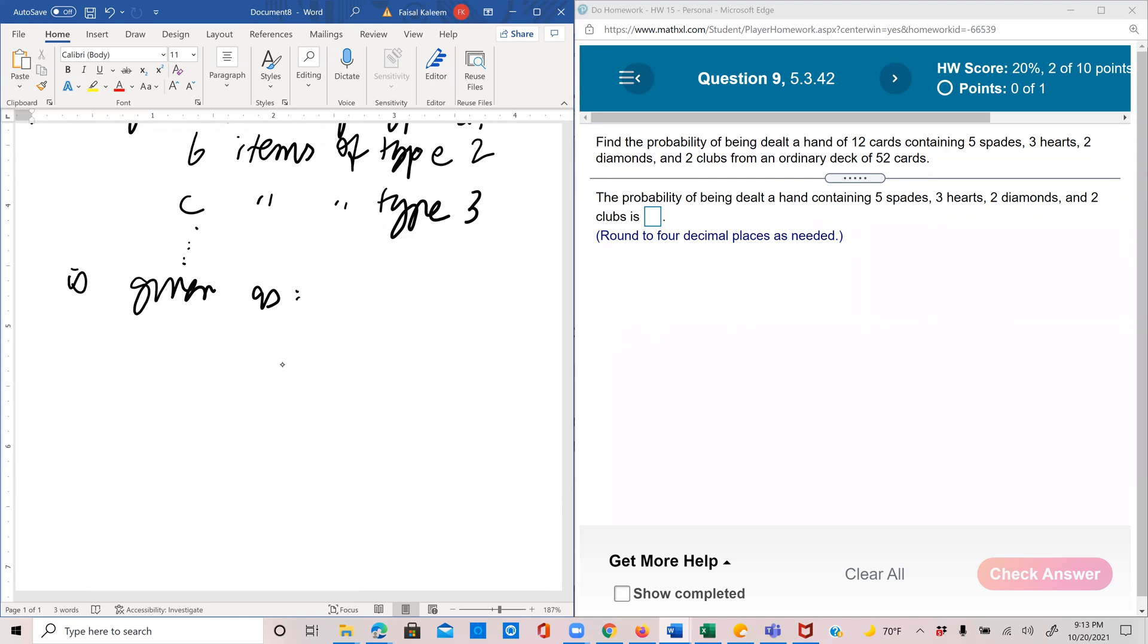So you pick little a items of type 1, and there are total big A items of type 1 available. So big A combination little a. Similarly, you pick little b items of type 2, and there are capital B items of type 2 available. And then similarly C combination c, and so on. You will do it as many times as needed.